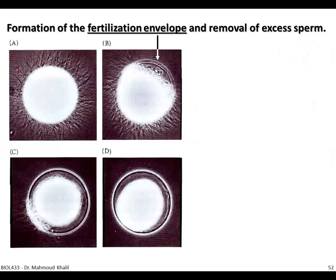Here we can see how the fertilization envelope forms to remove excess sperm — these are real photographs. In figure A, many sperm are trying to fertilize the egg. Once one sperm's binding protein binds with the receptor on the cell membrane and there is subsequent release of cortical granules and formation of the perivitelline space, the fertilization envelope starts to develop at the point of sperm entry. It then extends to the right and left, engulfing the entire egg. In figure D, the fertilization envelope has covered the entire egg, preventing any further sperm entry.